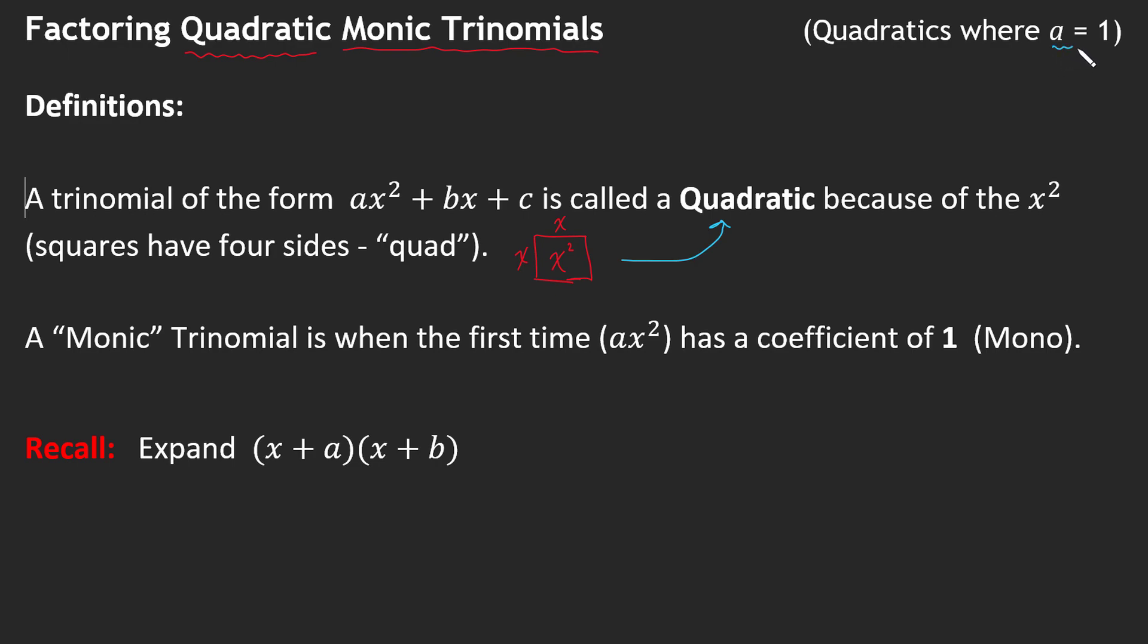Okay now what does it mean when I say a equals one? Well a monic trinomial is when we have this format of ax² + bx + c. Now a, b, and c would be numbers. We're going to see examples don't you worry. And a monic trinomial is just when that a value is a one. So if we don't see a number in front of x² and we have something like this, this is a trinomial. It is also a quadratic and is considered monic because the a value here is a one.